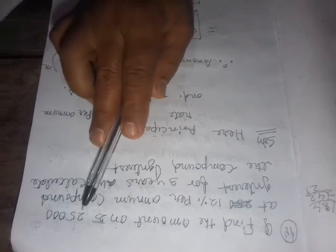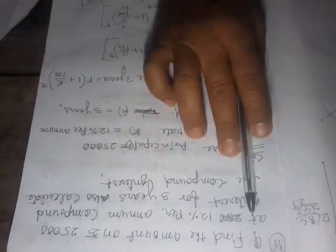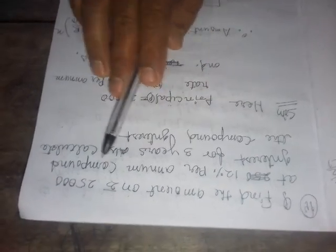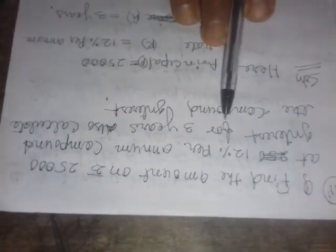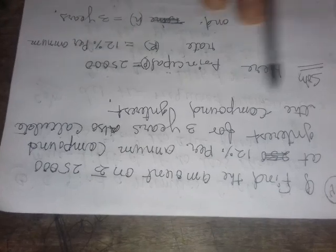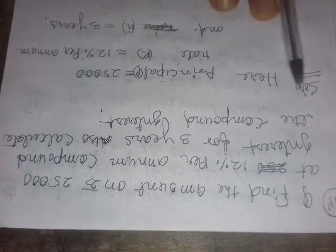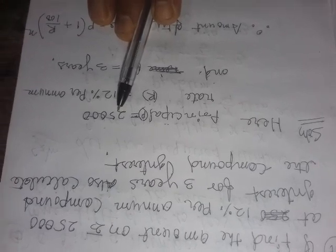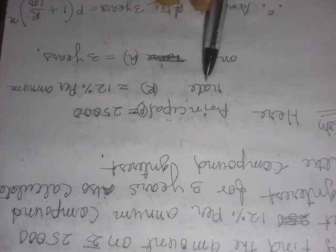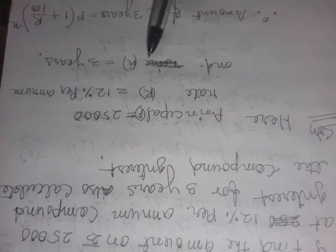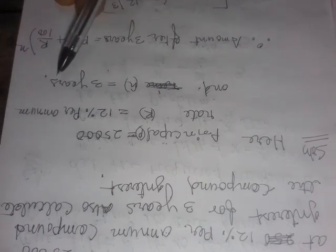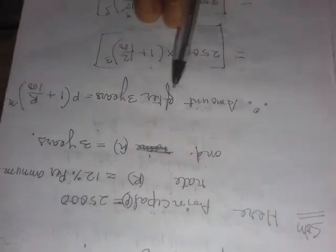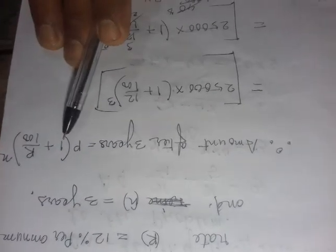Find the amount on rupees 25,000 at 12% per annum compound interest for 3 years, and also calculate the compound interest. Solution: principal P equals 25,000, rate equals 12% per annum, n equals 3 years. Therefore find the amount after three years using the formula.